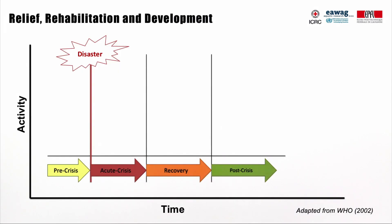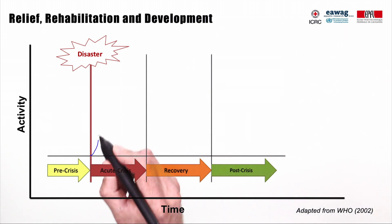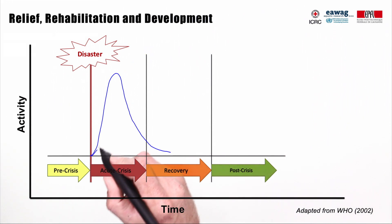Every humanitarian crisis has its own dynamic and evolution, but traditionally, humanitarian crises are schematized into four main phases. A pre-crisis phase where essential needs are met, but a risk exists that the situation will deteriorate; therefore, preparedness measures are sometimes taken. Once a disaster occurs, we enter the acute crisis phase, where essential needs are no longer met. During this phase, there is a peak of search and rescue activities in the immediate aftermath, followed by emergency relief activities aiming at stabilizing the survivors' physical and emotional condition. The primary focus is on life-saving activities and the overall affected community health status. This phase typically lasts between one to six months.